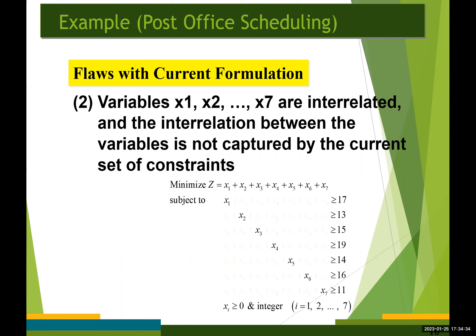For example, some of the people working on Monday (the x1 people) will also be working on Tuesday. This means x1 and x2 are interrelated. However, the current constraints do not indicate that the value of x1 has any effect on the value of x2.